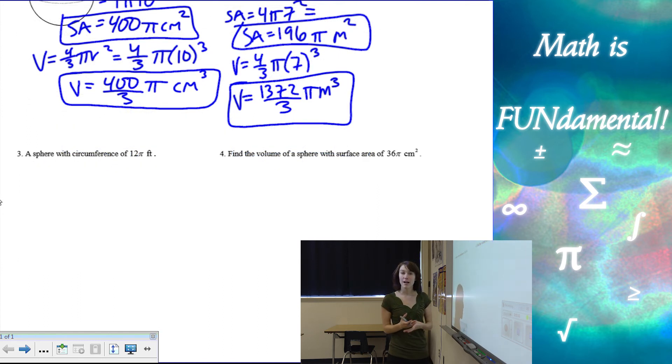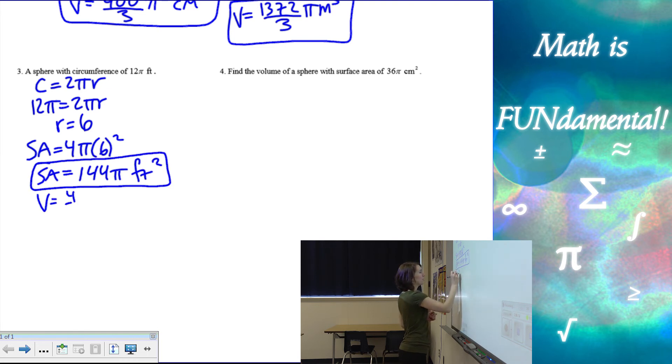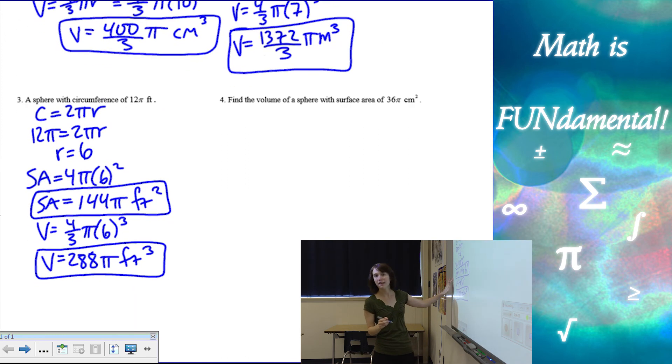Alright, so now we're going to try a couple more difficult examples. This one asks us to find the volume and surface area of a sphere with a circumference of 12 pi. So circumference is 2 pi r, so we can use this to find r. 12 pi equals 2 pi r, which means r has to equal 6. Now that I have the radius, I can plug that in and find the surface area, 4 pi r squared. So surface area, 4 pi times 6 squared is 144 pi feet squared. And my volume is 4 thirds pi times r cubed, so 4 thirds times 6 cubed is going to be 288 pi feet cubed. So just one little step at the beginning there that we had to do that was new on that one.